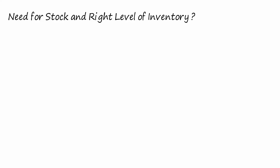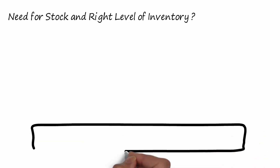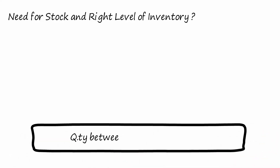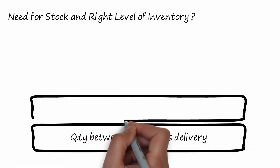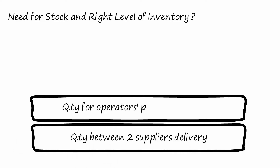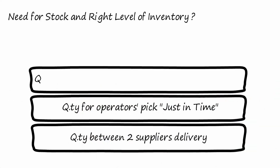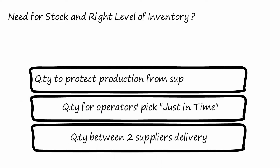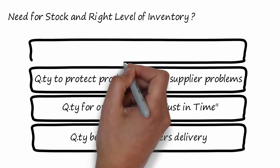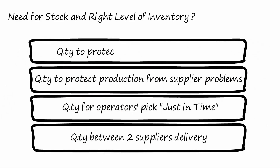How do we drive the need for stock to just the needed inventory? Talking about components stock, we need to: 1) make sure we have enough components between two supplier deliveries; 2) make sure we have enough components for our operators to pick up at the moment they need; 3) make sure we have enough components in case there is a problem with our supplier transport; and 4) make sure we have enough components in case there is a variation in our customer demand, and then in our production demand.